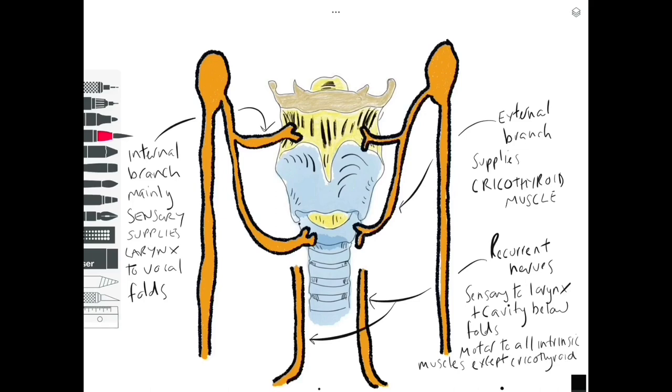It also has a sensory function being sensory to below the level of the vocal folds. So a dual role there for the recurrent laryngeal nerve. It has a sensory function below the folds, but it also innervates all of the muscles except for cricothyroid.